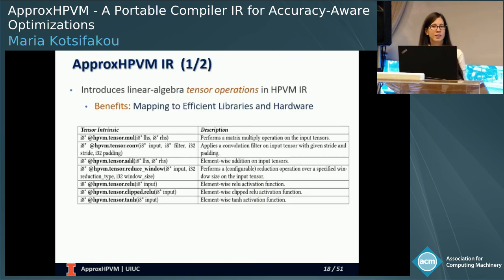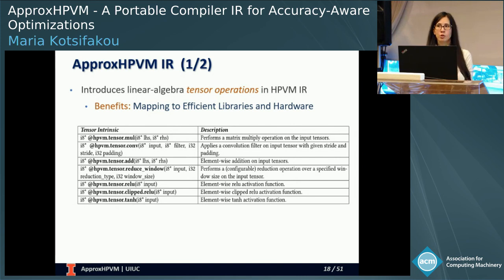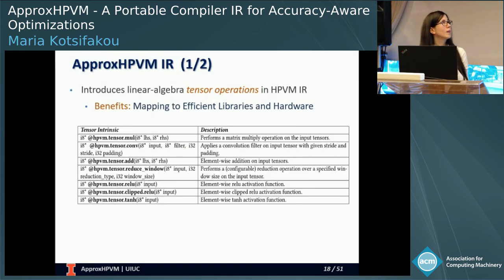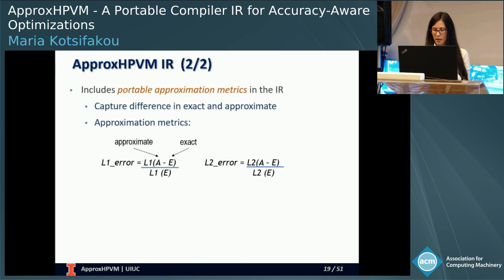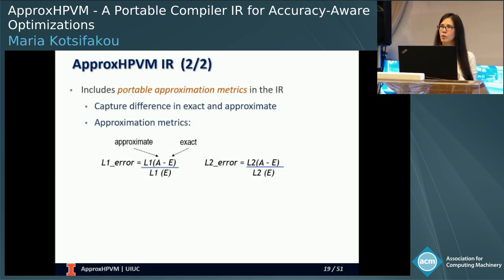ApproxHPVM IR extends the HPVM IR in two ways. The first extension is the introduction of linear algebra tensor operations in the IR — operations such as tensor multiplication, convolution, addition, etc. The main benefit is that we can directly map them to efficient library and hardware implementations. The second extension is the inclusion of hardware-independent approximation metrics, which capture the allowable difference between the exact and approximate output of tensor operations.